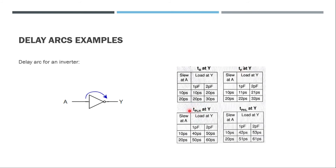Not only rise time, but all conditions — fall time at the output, fall slew, propagation delay low-to-high and high-to-low — are listed as lookup tables in the dot liberty file. Depending on the input slew and output load, the corresponding delay is read from the table. If the value is between table entries, it is interpolated; if it falls outside the table range, it is extrapolated.